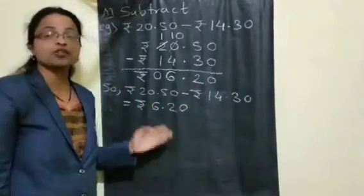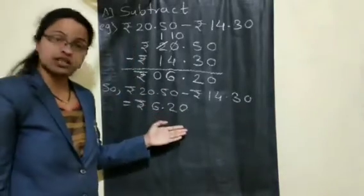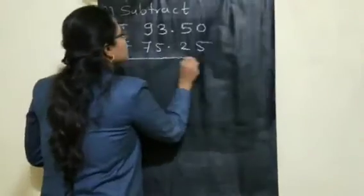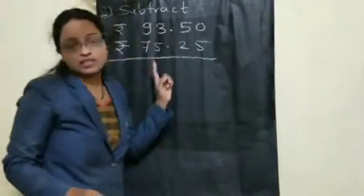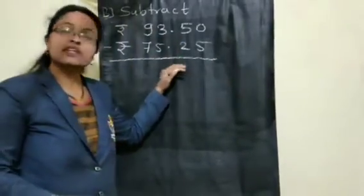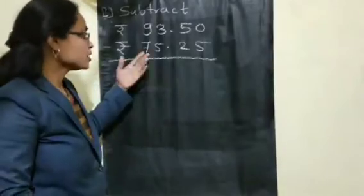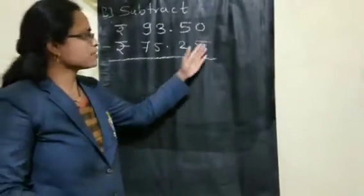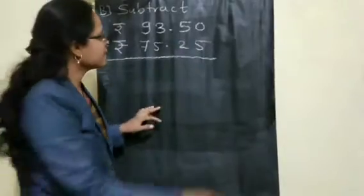Like this, children, you have to solve money problems based on subtraction. Now, in Part B, the problems are already given in vertical form, so here you only have to do the subtraction. Let us start from the paise side.